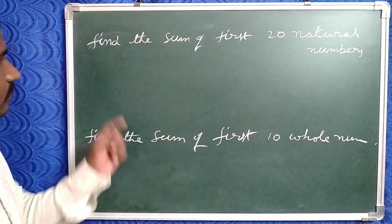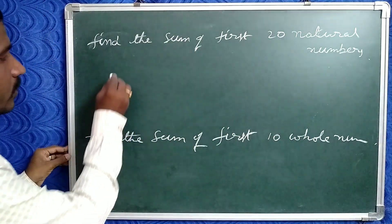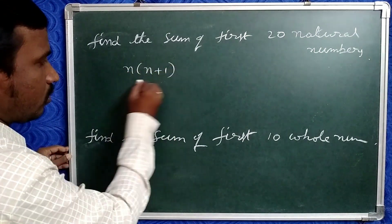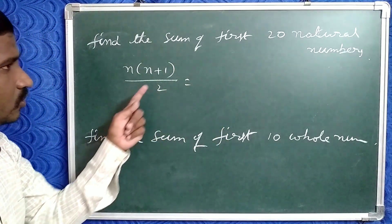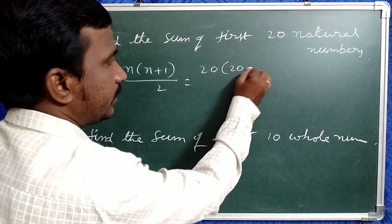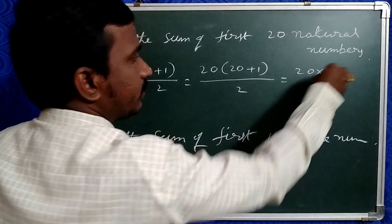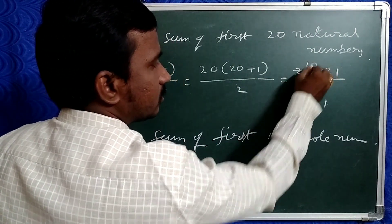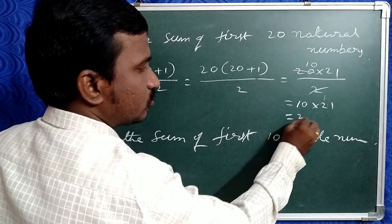Suppose given: find the sum of first 20 natural numbers. Using our formula n(n+1)/2, there are 20 natural numbers so we write 20 instead of n: 20 into (20+1) divided by 2 = 20 into 21 divided by 2. Cancel 2: 10 into 21 equals 210. That is why the sum of first 20 natural numbers is 210.